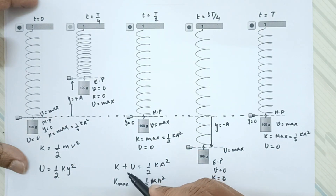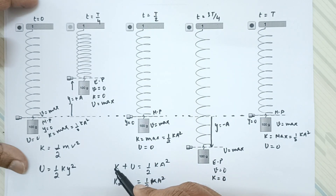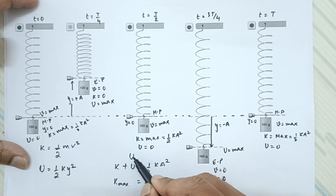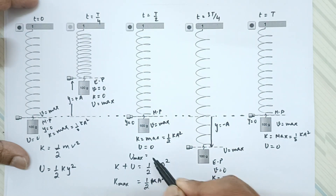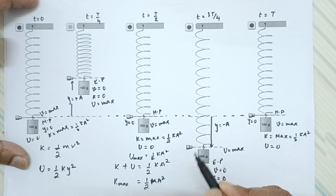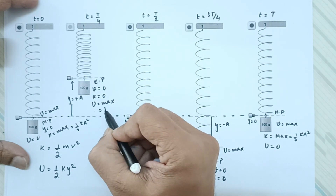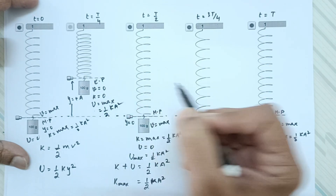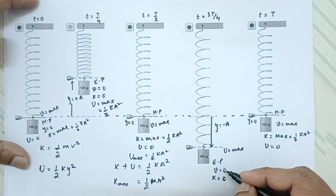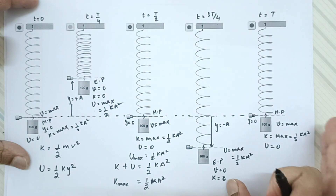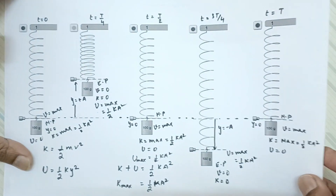In the same way, if potential energy is maximum, kinetic energy is zero — at the extreme positions — giving maximum potential energy of half k a square. So U-max equals half k a square. We are now going to plot this on the graph.